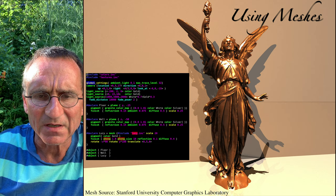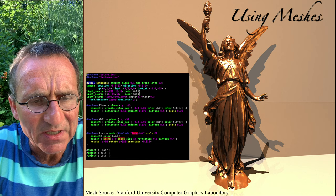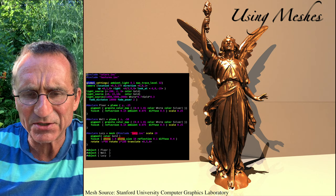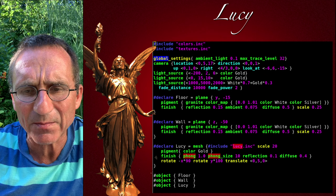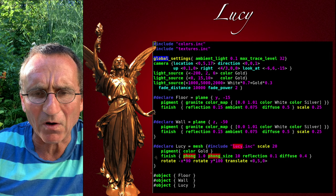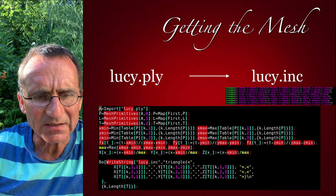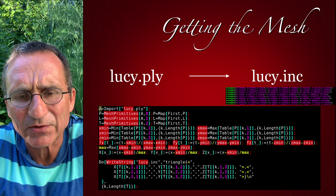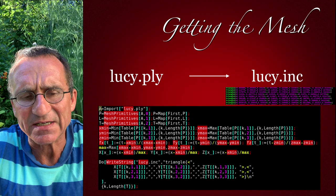A lot of geometric data is already available in archives and libraries. In this case we took a famous mesh from the Stanford University computer graphics laboratory and rendered it. The mesh contains the geometric data of Lucy, a statue, and the mesh is stored in a separate file. The Stanford repository has a .ply file, which is a binary file, but Mathematica can read this and transform it into a text file using triangles, which is then included into POV-Ray. Of course there are also converters which do that for you.